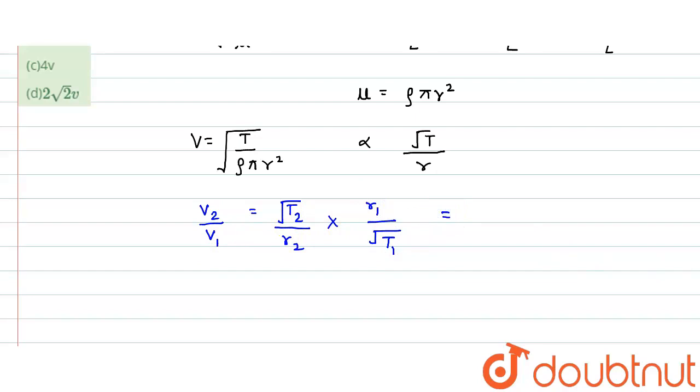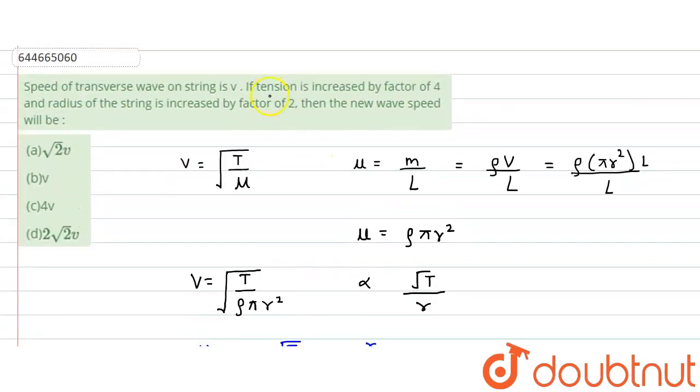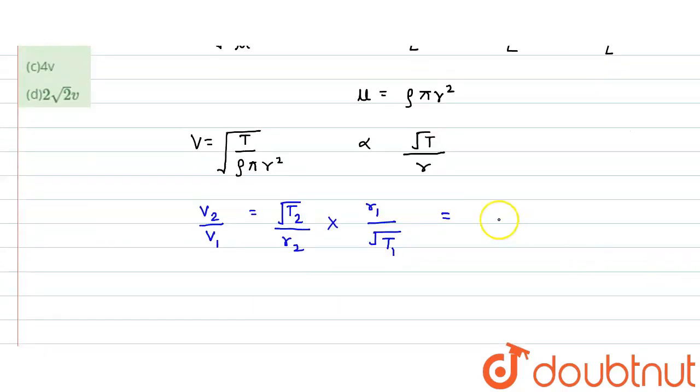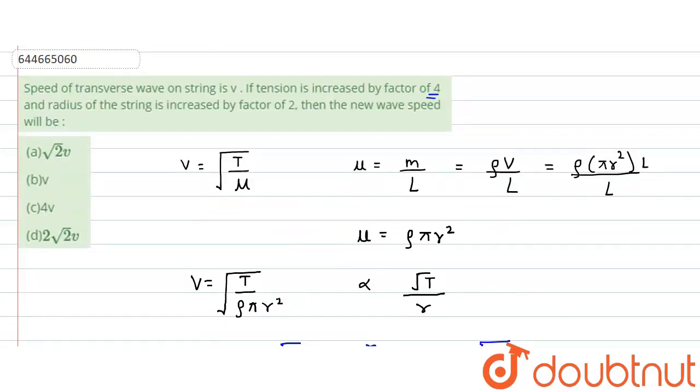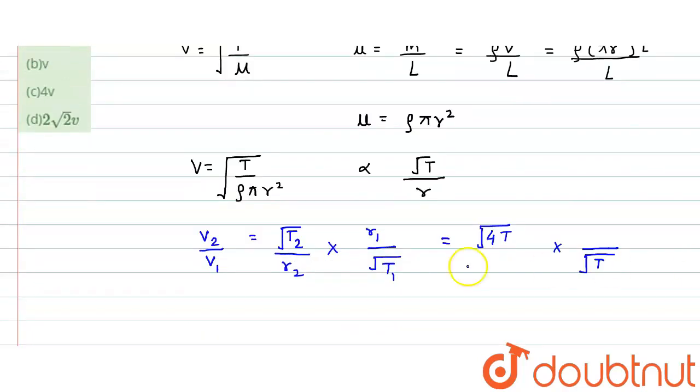What is the relationship which is given? Tension is increased by a factor of four. If the initial tension T₁ is T, the final value of tension is 4T in the square root. What about the radius? Radius is doubled. If r is the initial radius, now it is 2r.